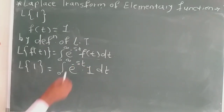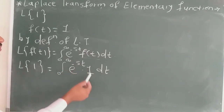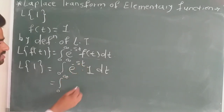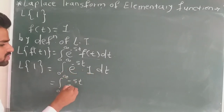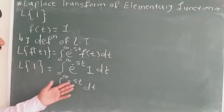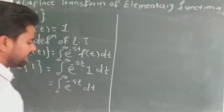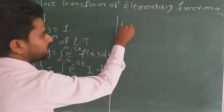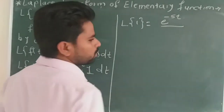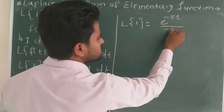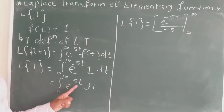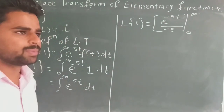Multiplying 1 into e raised to minus st gives e raised to minus st. So we get the integration from 0 to infinity of e raised to minus st dt. The integration of e raised to minus st is equal to e raised to minus st upon the coefficient of t, which is minus s, evaluated from limit 0 to infinity.